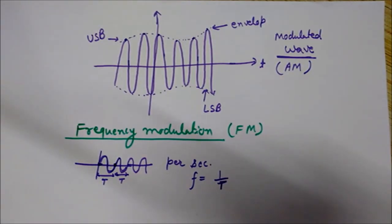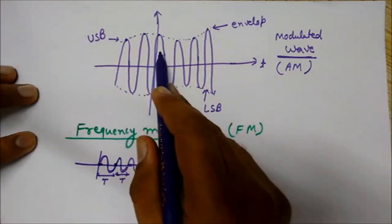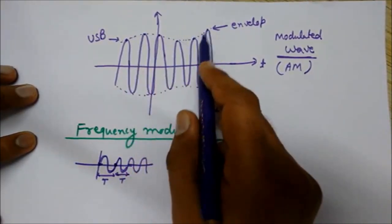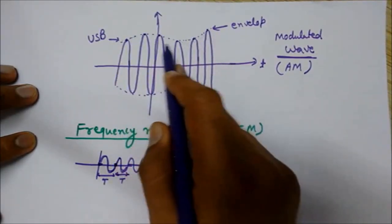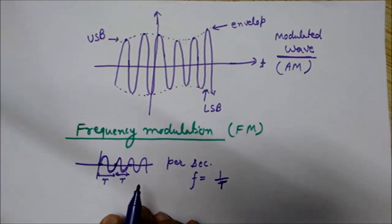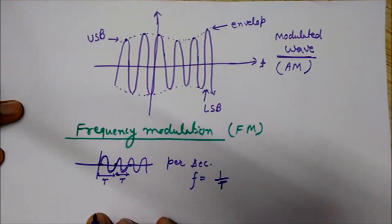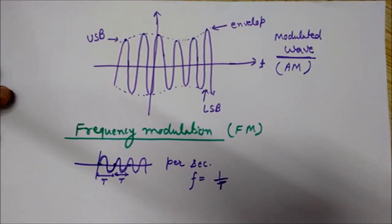Now let's come to the definition of frequency modulation. In frequency modulation, the frequency of the carrier wave is varied according to the amplitude of the message signal. In amplitude modulation, we varied the amplitude of the carrier wave. But in frequency modulation, we will not change the amplitude — we will just vary the frequency. The information will be contained in the variations of the frequency of the carrier wave.